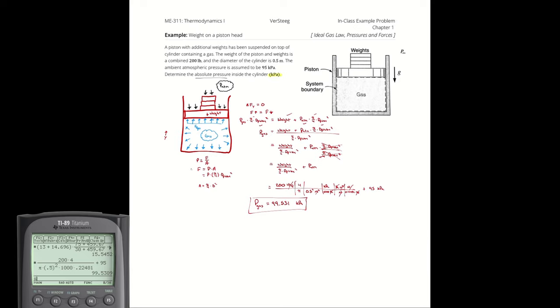That would imply that the pressure of the gas was actually less than atmospheric pressure, which doesn't make sense. It would not be able to hold up the weight here. So, 99.53 minus 95 gives us 4.531. If I had wanted the gauge pressure, this would be the answer. But I don't, so I won't write it down.